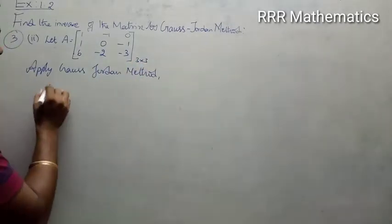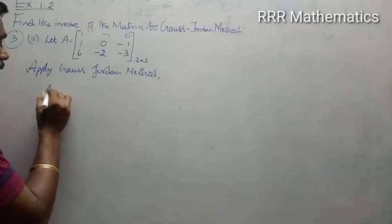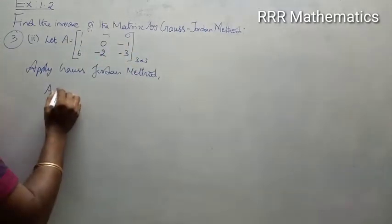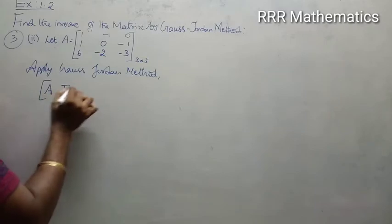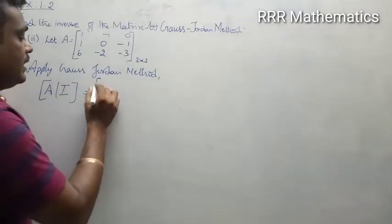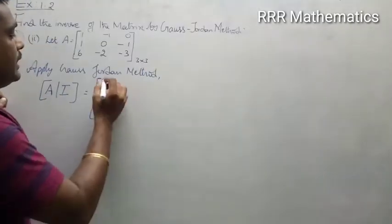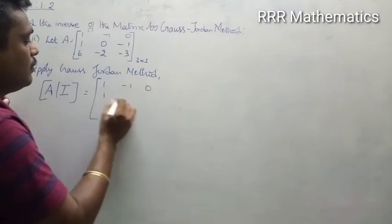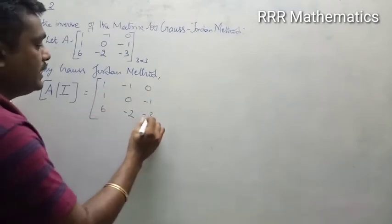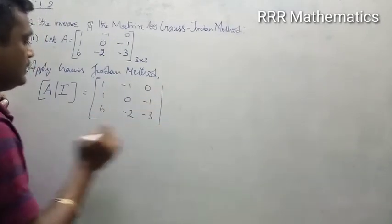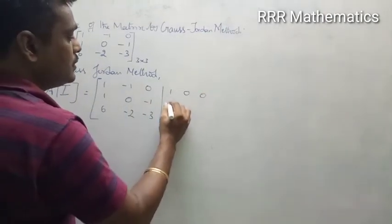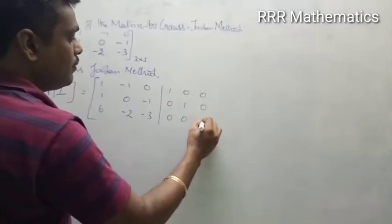If you want to consider the A matrix with its respective identity matrix I, which is 3 by 3. Therefore, what is A: 1, -1, 0; 1, 0, -1; 6, -2, -3. The respective identity matrix is 1, 0, 0; 0, 1, 0; 0, 0, 1.